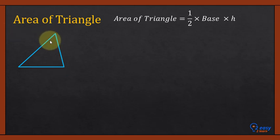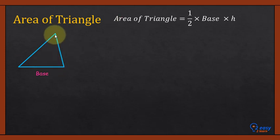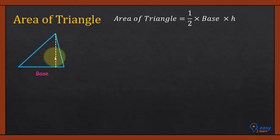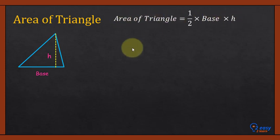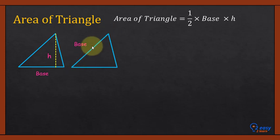This is an acute angle triangle. If we select this horizontal side as a base, the rule to find the height of the triangle is: draw a perpendicular from the opposite corner. This yellow line is perpendicular to the base line, and this is the height of the triangle. You will use this pair — base and height — to find the area of the triangle.